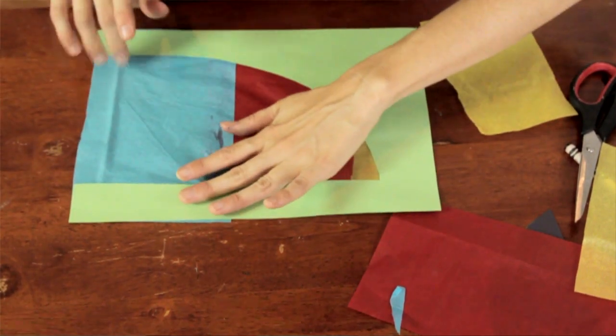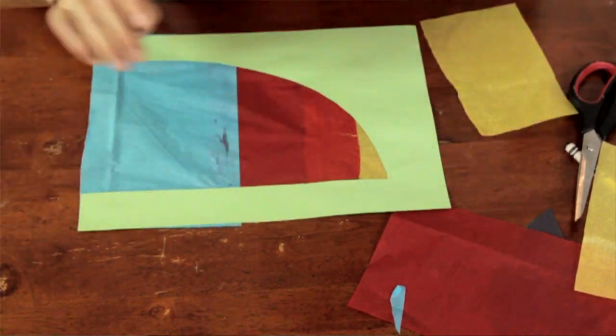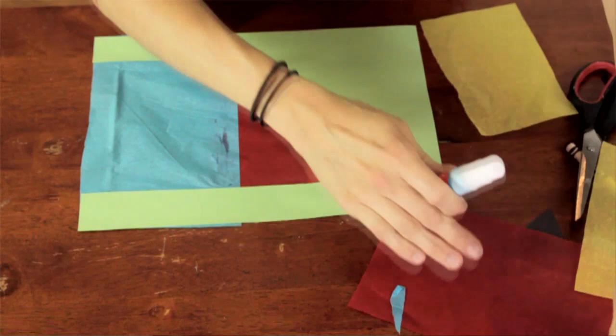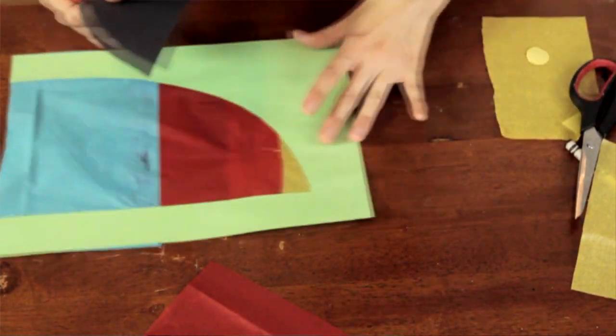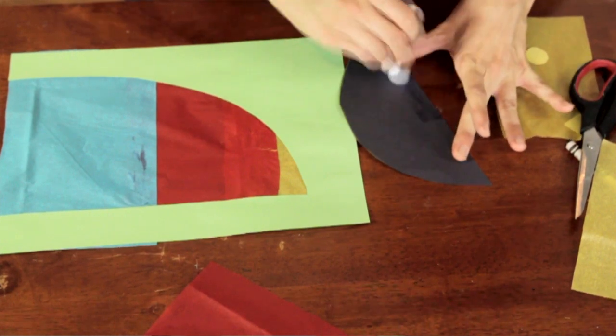So when you turn it over, you've got your nice rainbow toucan's beak. And now let's give him his head.